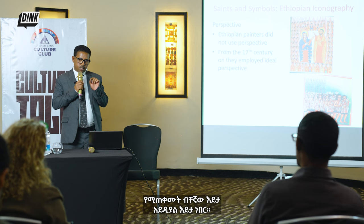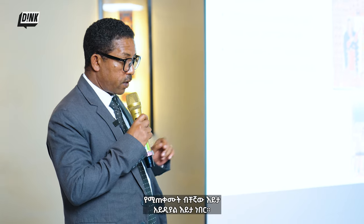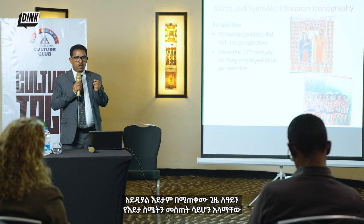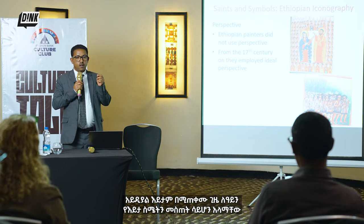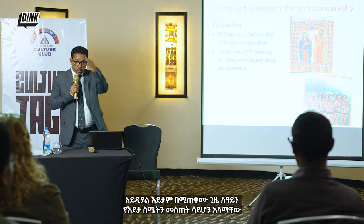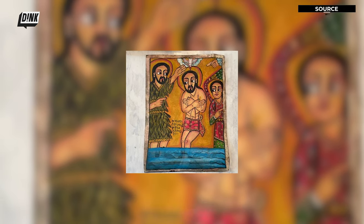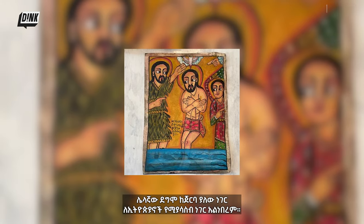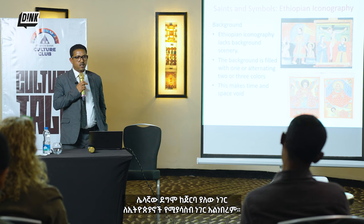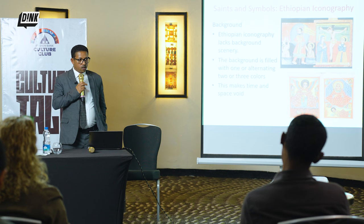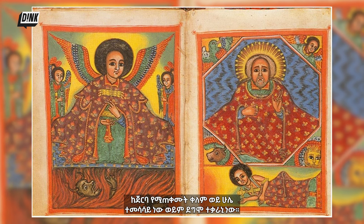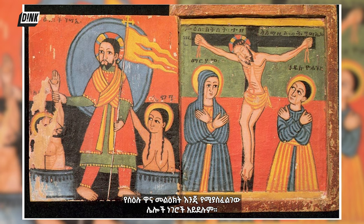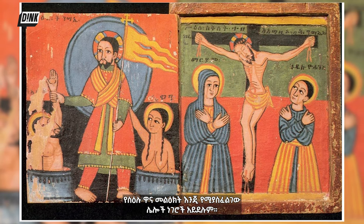The other characteristic is perspective. The only perspective they used is ideal perspective. When they use ideal perspective, they intentionally did not want to create a sense of depth to the eye, rather to express numbers. The other is background — for the Ethiopians, background is not necessary. The background is always filled with either one color or alternating colors. What is important is the subject matter, not related things.